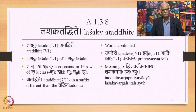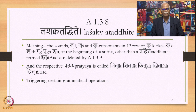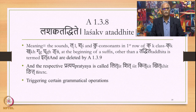When we put all these words together, the meaning of the sutra is: the sounds L, Sh, and Ku — consonants in the first row of the K class, namely K, Kh, G, Gh, and N — at the beginning of a suffix other than Ataddhita are termed Ith, and are further deleted by 1.3.9. The respective Pratyaya is then called Lith (one which has L as Ith), Shith (one which has Sh as Ith), Kith, Gith, etc. These sounds are used to describe linguistic phenomena by triggering certain grammatical operations.